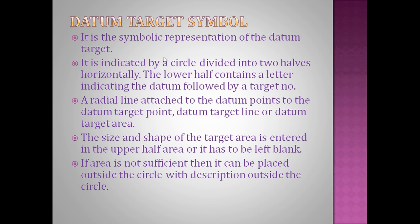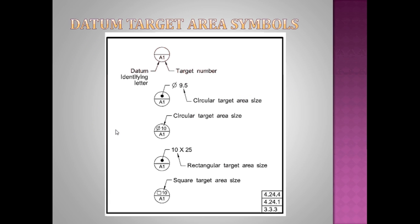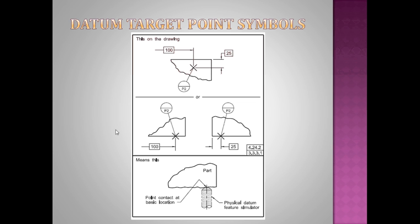A radial line is attached to the datum points, to datum target points, or datum target line, or datum target area. A radial line is basically attached for the representation purpose so that it targets to the datum.